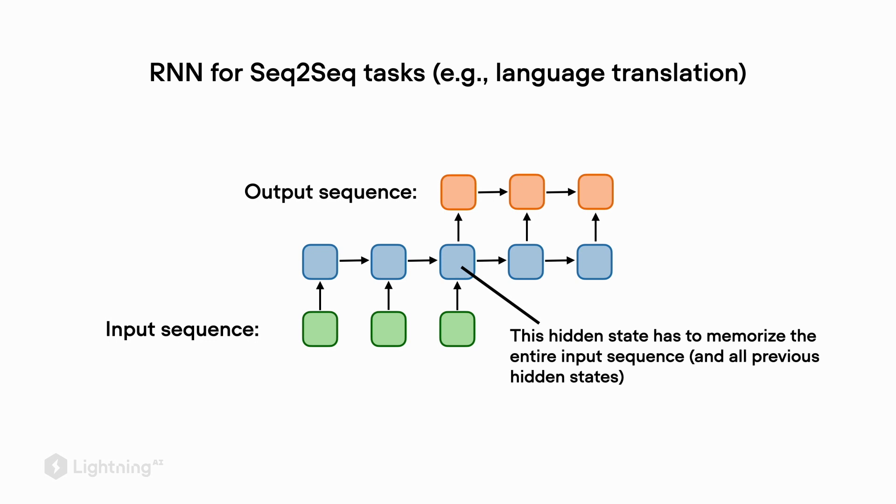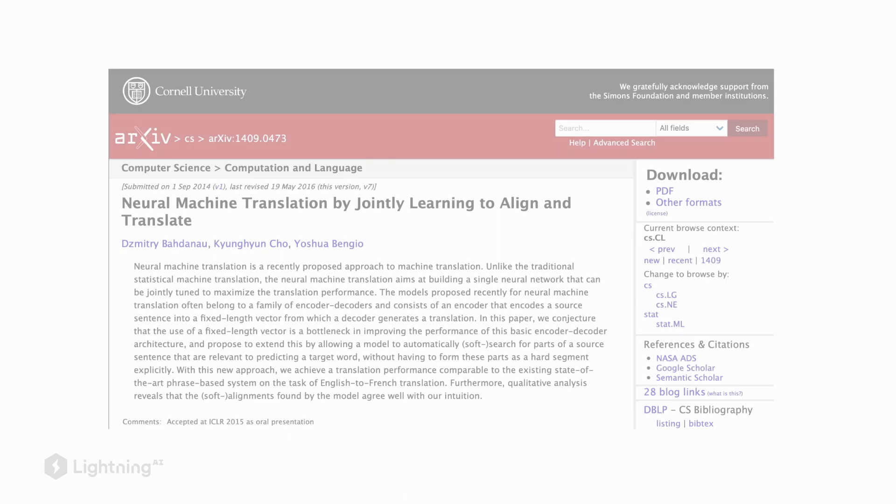However, as a shortcoming of this, the recurrent neural network has to memorize a lot of information in one hidden state. This approach unfortunately does not work very well with longer sequences or sentences, and this is why researchers developed the attention mechanism to address this problem.